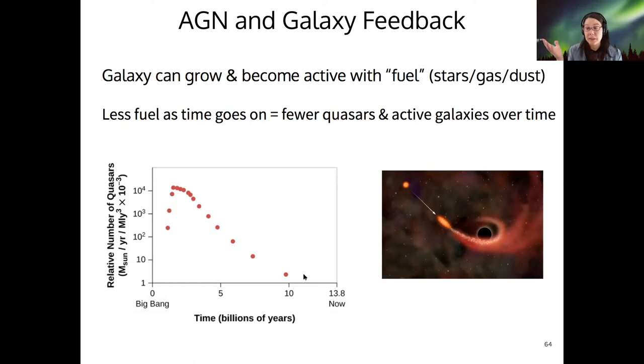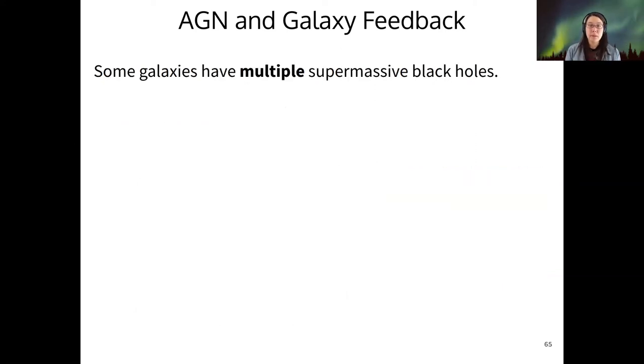But there are some active galaxies that are relatively nearby. And it's possible, actually, that the Milky Way was active not too long ago. There's evidence called the Fermi bubbles that your textbook talks about that are probably structures that were created when the Milky Way was active.